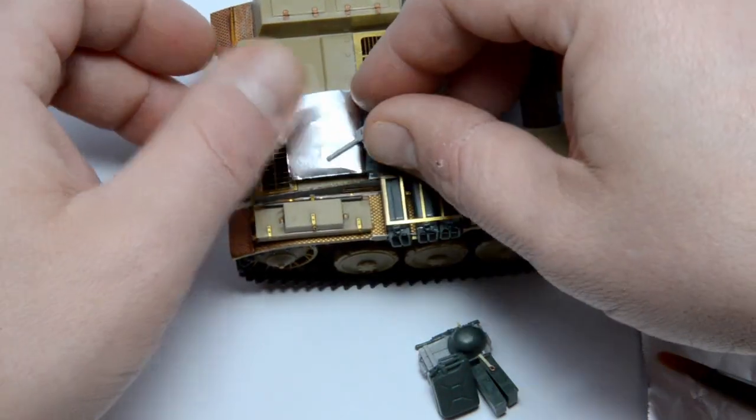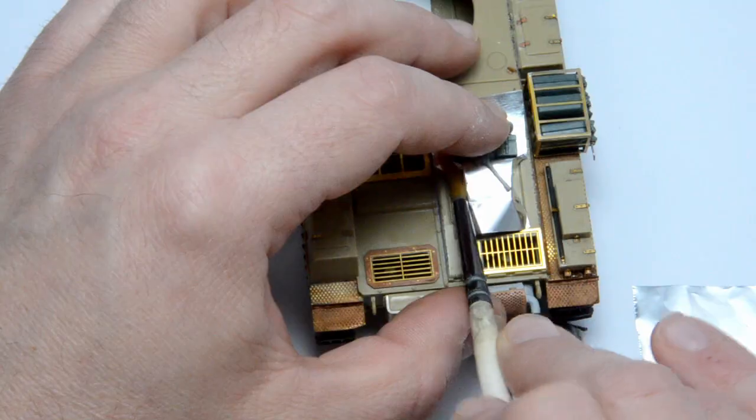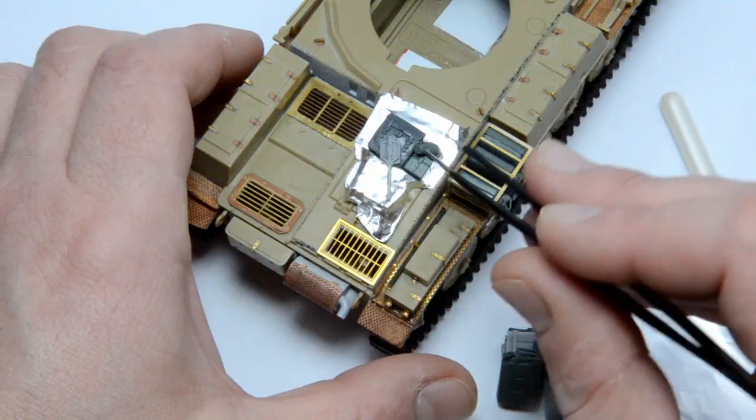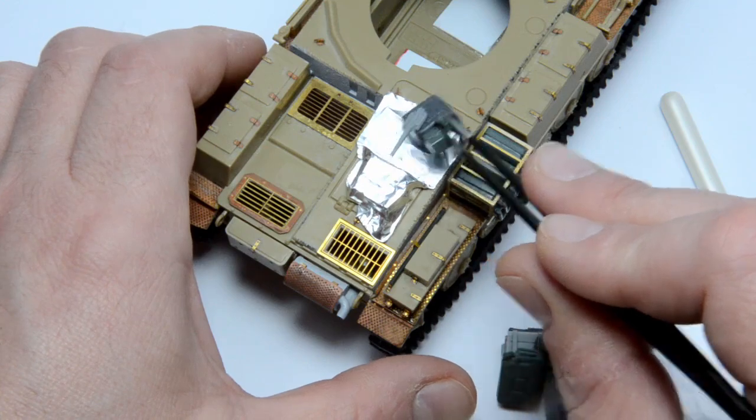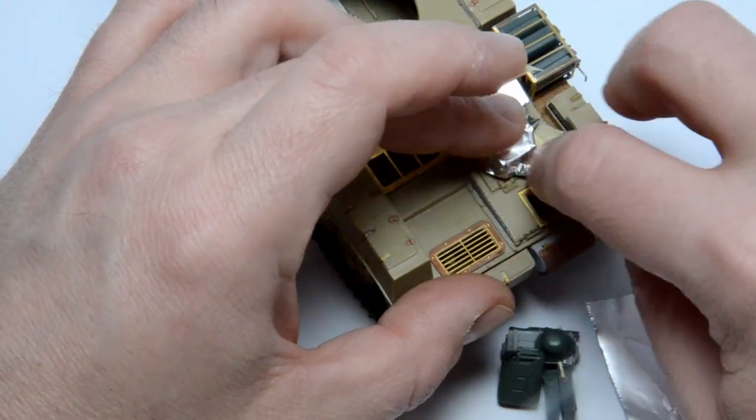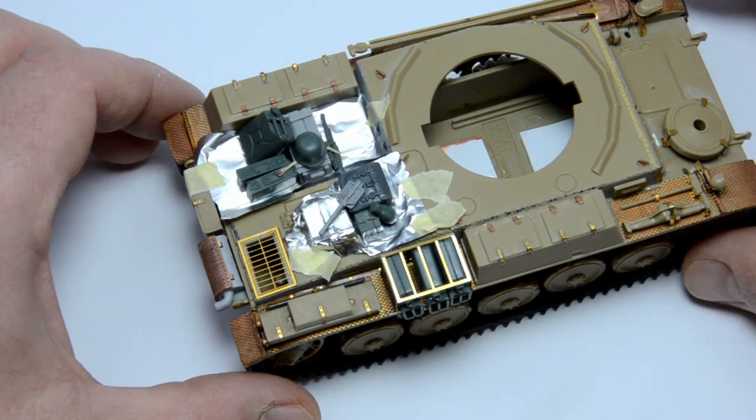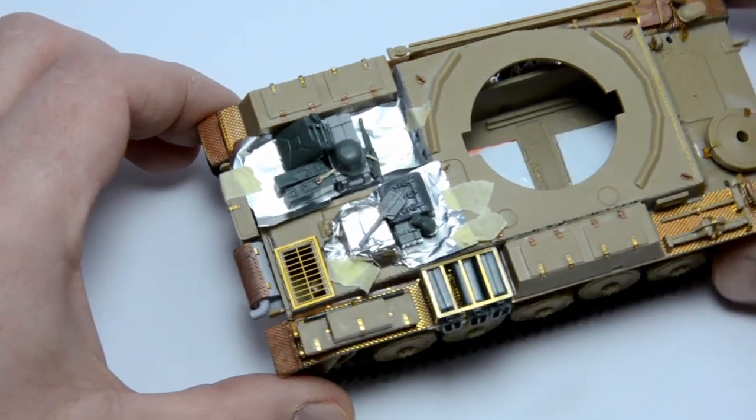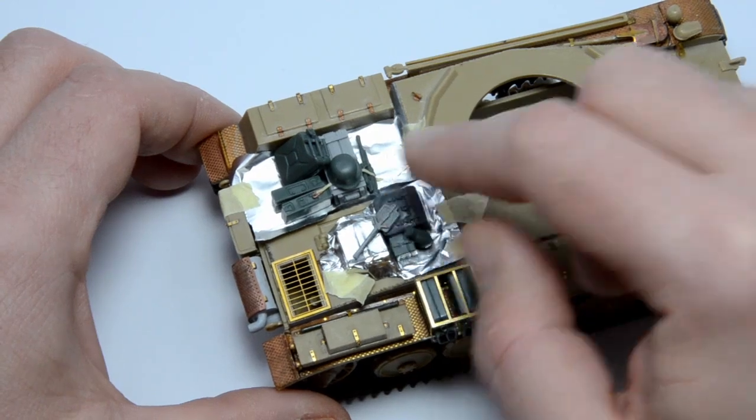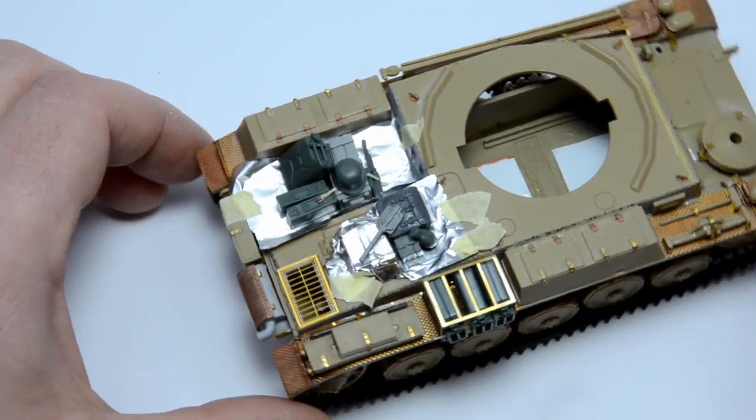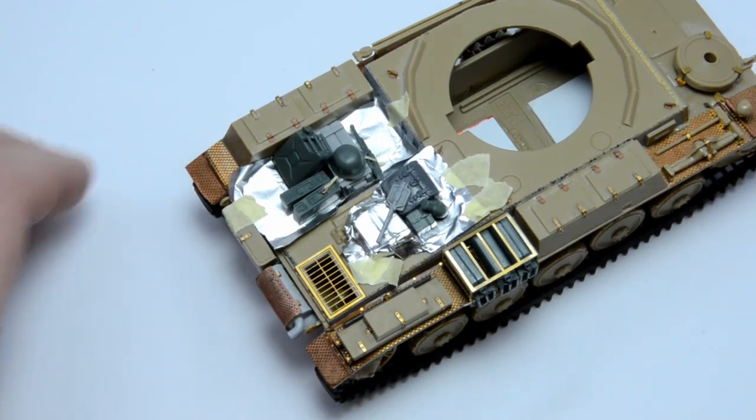I will put the tarps under the cargo. In real life you do this if you don't want your metal things to move around on a rattling tank. At least I would do that. And I think that the crew did this too. I put some aluminum foil over the tank. That way you can copy the surface details correctly and you won't have to worry that the putty sticks to the tank.